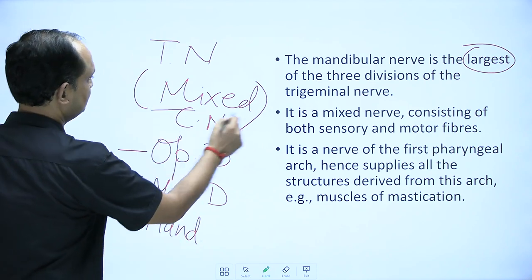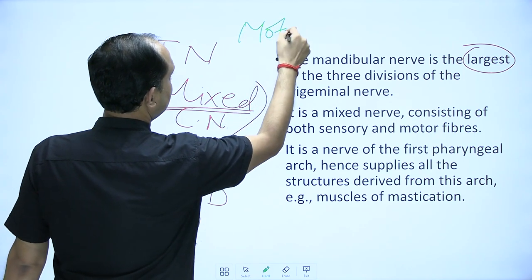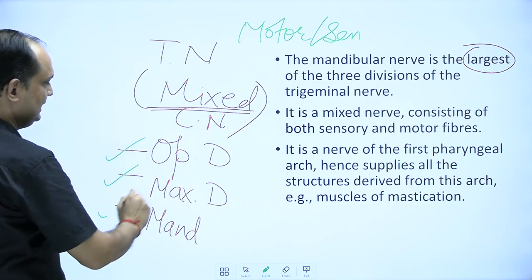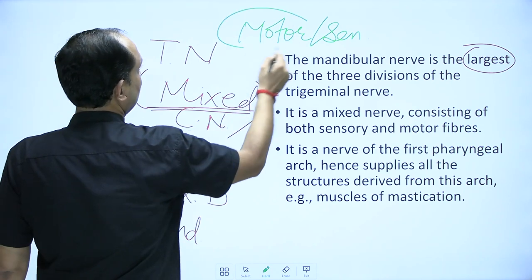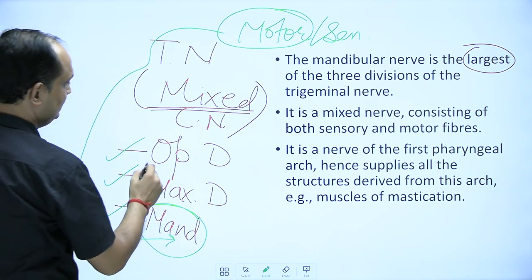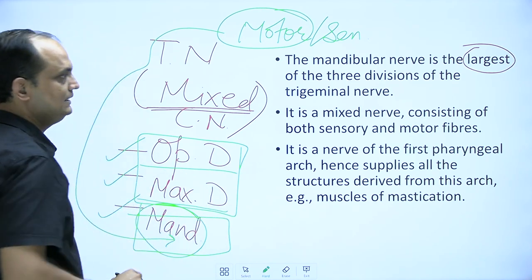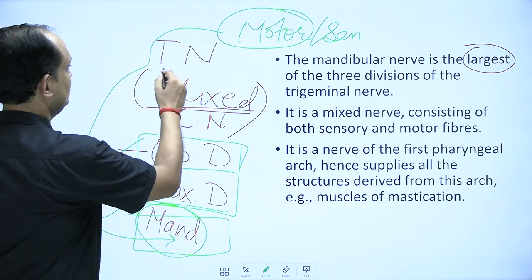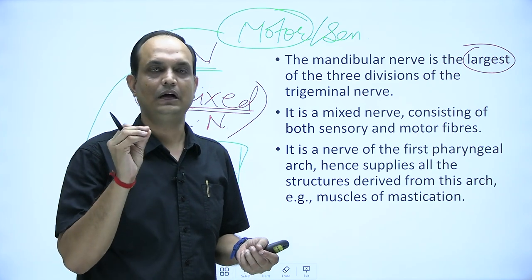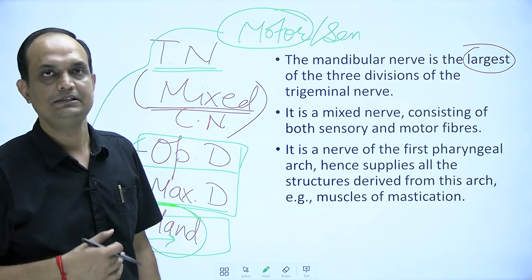Since the trigeminal nerve is called mixed, it has two components: a motor component and a sensory component. All three divisions carry a sensory component, but the motor component of the trigeminal nerve is present only in the mandibular nerve. That means the ophthalmic and maxillary divisions are pure sensory nerves, while the mandibular nerve is a mixed nerve. This is a commonly asked viva question: which division of the trigeminal nerve carries the motor component? The answer is the mandibular nerve.